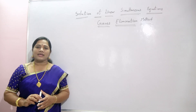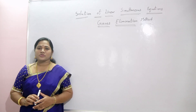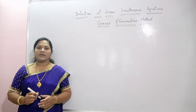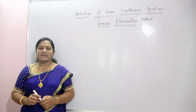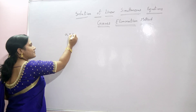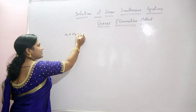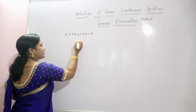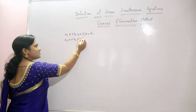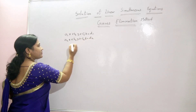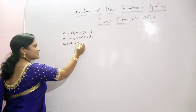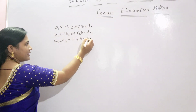first the unknowns are eliminated successively and the system is reduced to an upper triangular system, from which the unknowns are found by back substitutions. Let us consider a system of linear equations: A1x + B1y + C1z = D1, A2x + B2y + C2z = D2, and A3x + B3y + C3z = D3.